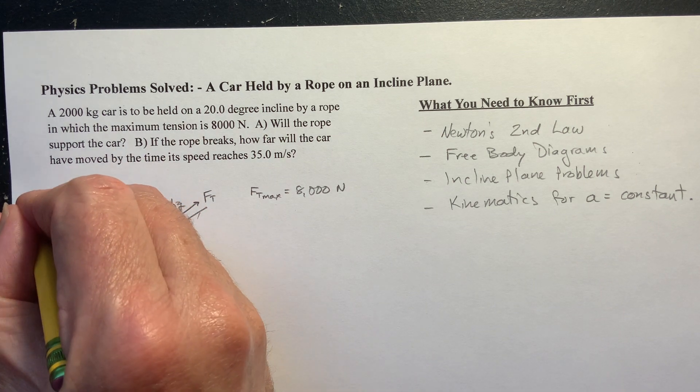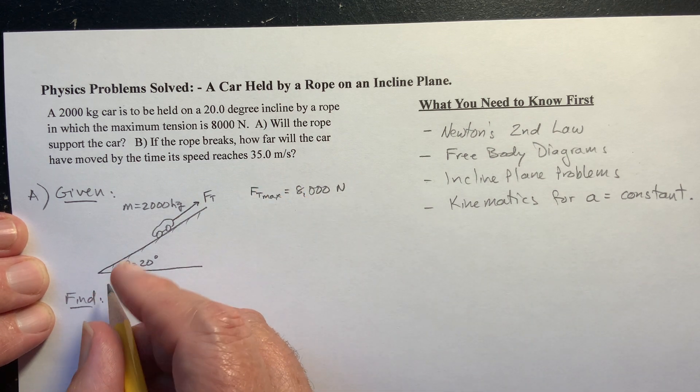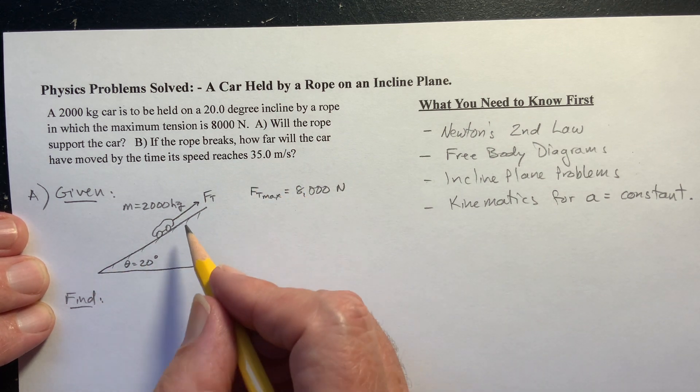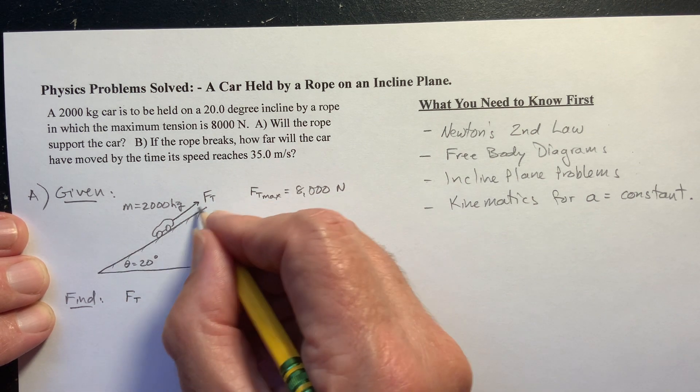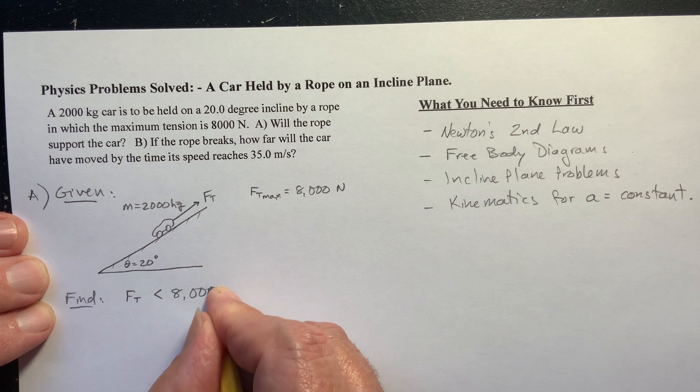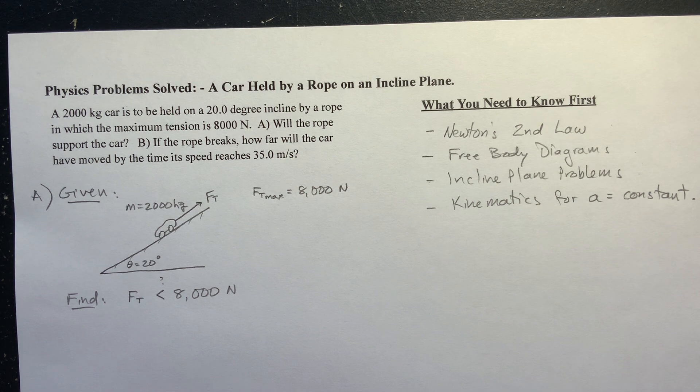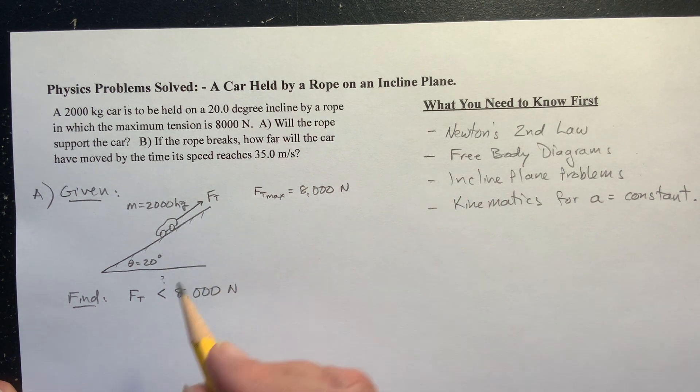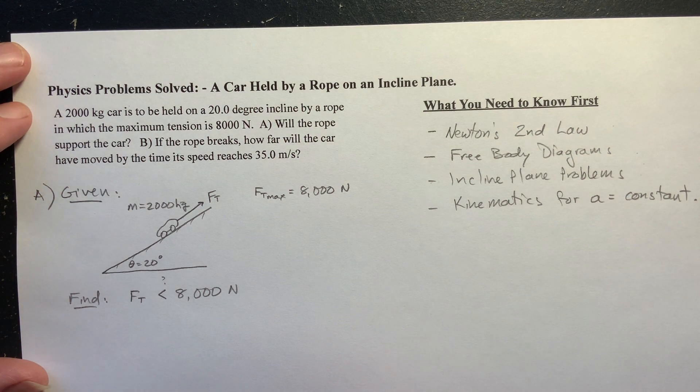So that's everything. So what we really want to know, what we really want to find is, and this is for part A, we want to find, does the rope hold? In other words, is F_T, this tension force in the rope, is it less than 8,000 newtons? If it is, then the rope will hold. But if this tension force needs to be greater than 8,000 newtons, the rope will break and it won't hold.